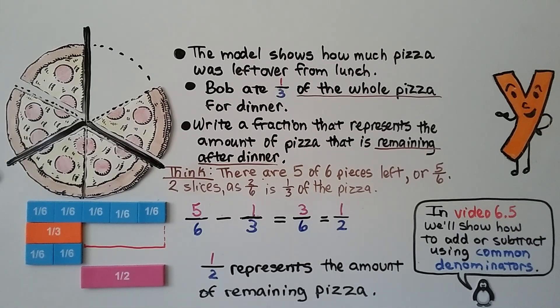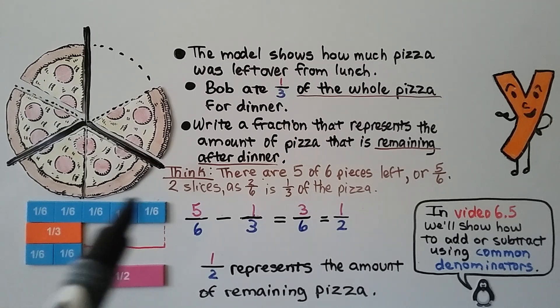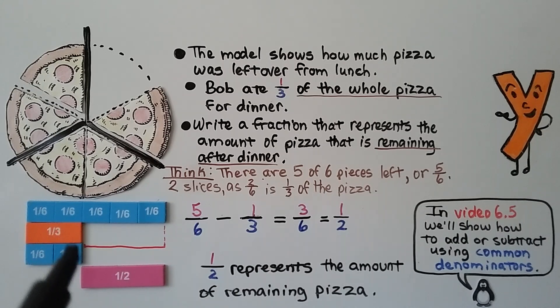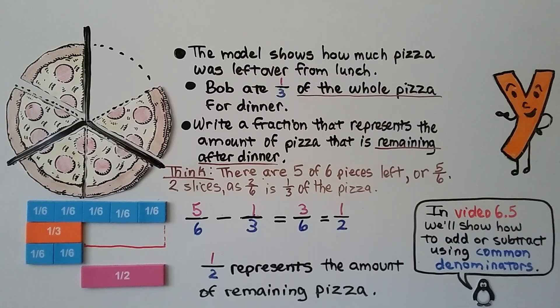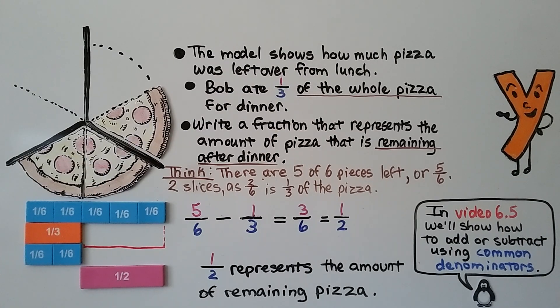Two slices, if we split this into three equal parts, two slices as two-sixths would be one-third of the pizza. So we have five-sixths of the pizza left. We want to take away one-third, which is two-sixths. It leaves half the pizza. If we take away two slices as one-third, it leaves half the pizza. So one-half represents the amount of remaining pizza.